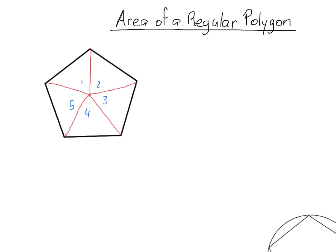But how does that help us? Well, we know that the area of a triangle is equal to half base times height. So let's look at triangle number 4, just because it's nice and easy to see right there at the bottom.